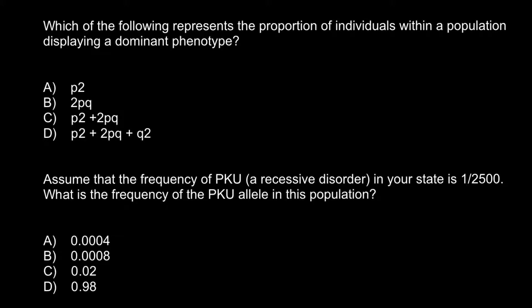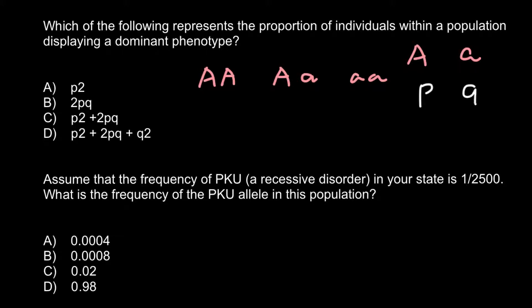In order to answer this question, everything you have to know is the Hardy-Weinberg formula. In this formula we have two alleles — capital A and small a — and these two alleles can make in a diploid organism three different genotypes. For capital A, the formula uses P, and for small a, the recessive allele, it uses Q.